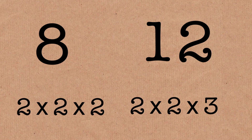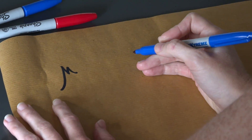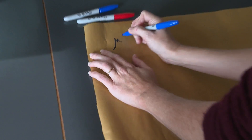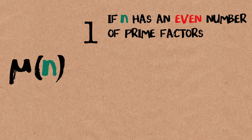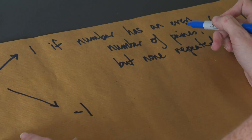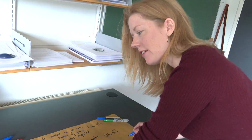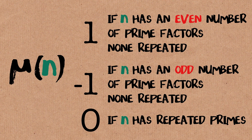I'm going to ignore numbers that have repeated prime factors. I'm going to define a function — mathematicians call it mu — and this function takes in a number and outputs 1 if n has an even number of prime factors with none repeated, minus 1 if it has an odd number of prime factors with none repeated, and 0 if any prime is repeated in the factorization. Let's do some hands-on work, because this is a complicated definition.